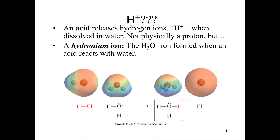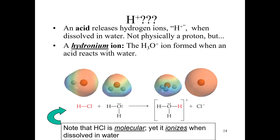You can see HCl reacting with water. Notice that HCl is technically a molecular compound, and yet when it is dissolved in water, because of this reaction, it ionizes. In reality, the so-called proton or hydrogen ion is actually the hydronium ion that we are showing here.